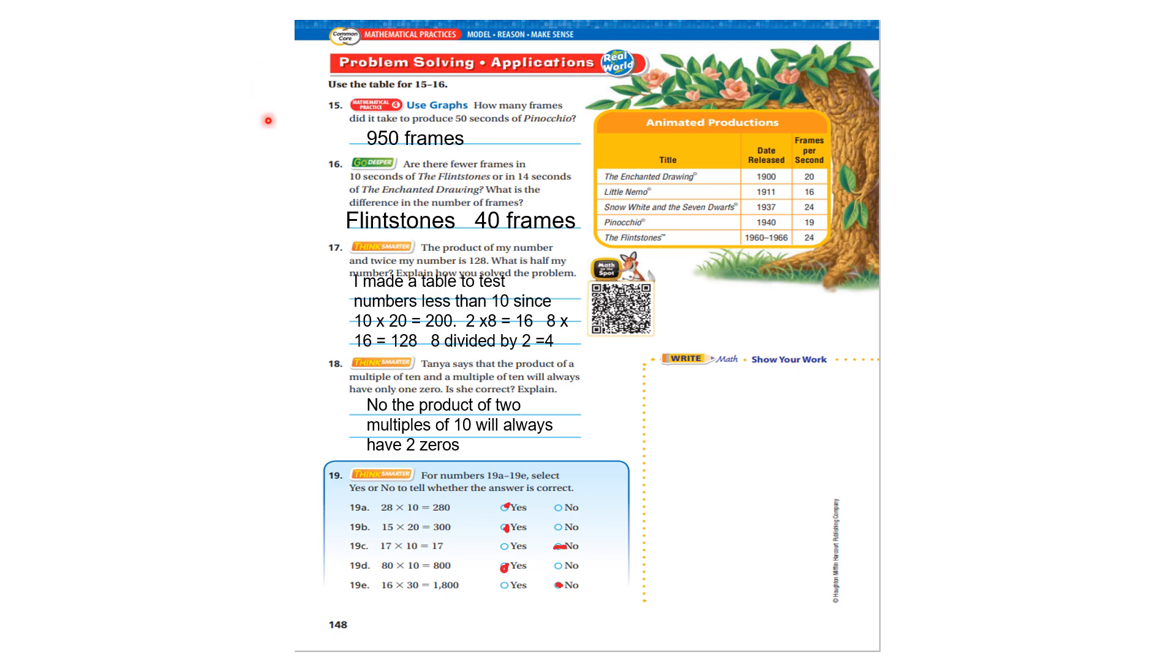Let's look at this page. How many frames did it take to produce fifty seconds of Pinocchio? Nine hundred and fifty. Pinocchio had nineteen frames per second times fifty, nine hundred and fifty. Are there fewer frames in ten seconds of the Flintstones or in fourteen seconds of Enchanted Drawings? In the Flintstones, ten seconds would have been twenty four times ten. And in Enchanting Drawing, it would have been twenty times fourteen. You would have had to find the products of them both, subtract, and you would have found that it would have been Flintstones by forty frames.